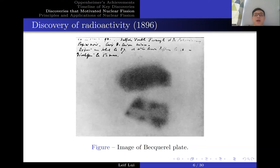The problem was Becquerel's initial hypothesis was incorrect. Uranium salts are compounds which contain elements other than uranium, and he hypothesized that it was the other elements interacting with the uranium in a special way such that they emitted this kind of radiation. At that time, with the benefit of hindsight now, we know that is not true, but at the time it was a reasonable conclusion.